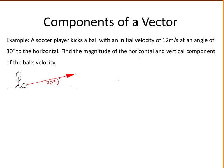Velocity is a vector quantity since it has both magnitude and direction. The magnitude is its speed, which is 12 meters per second, and the direction is 30 degrees to the horizontal. So the magnitude of the velocity is 12 meters per second — you do not need to compute this yourself since you are given the value in the question.